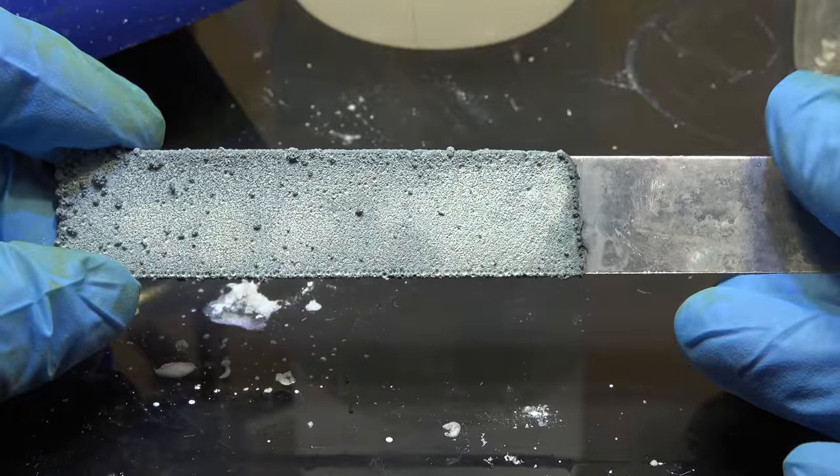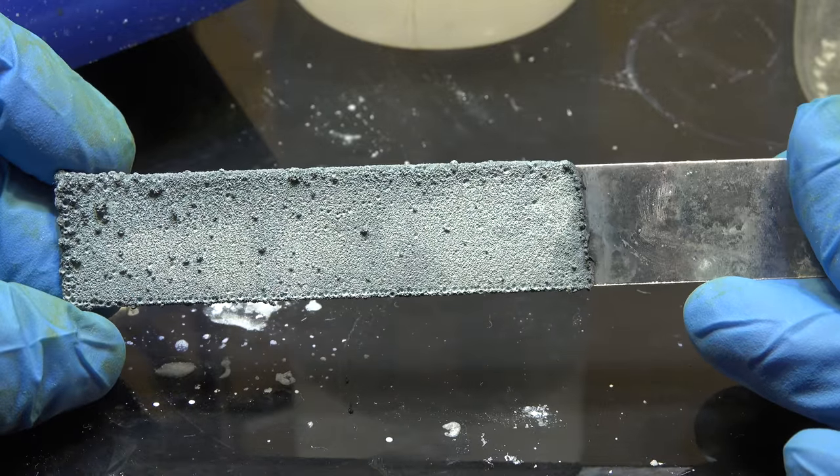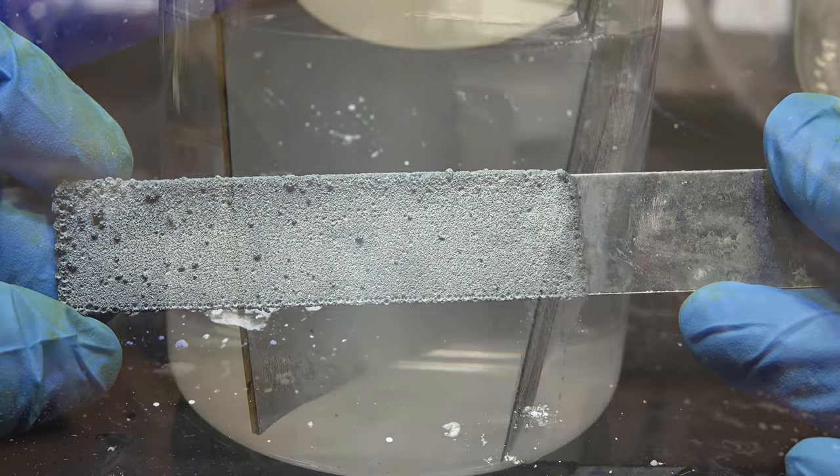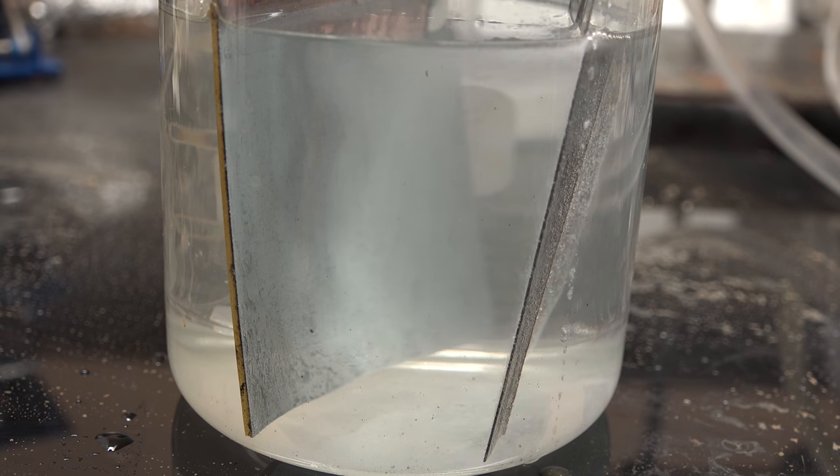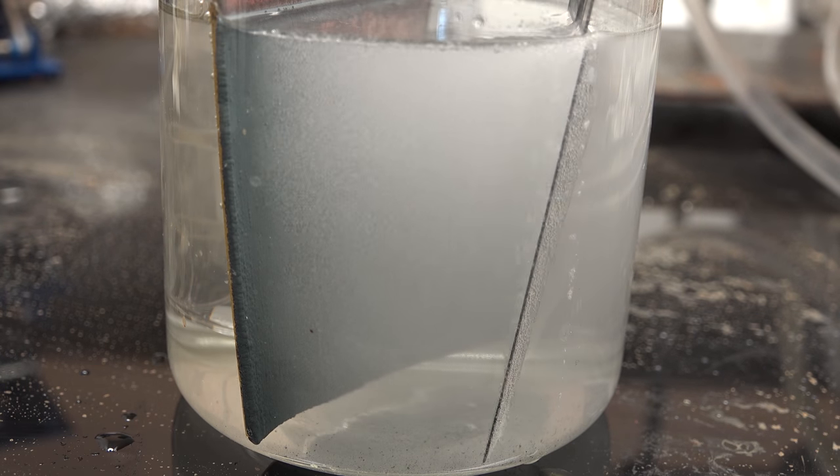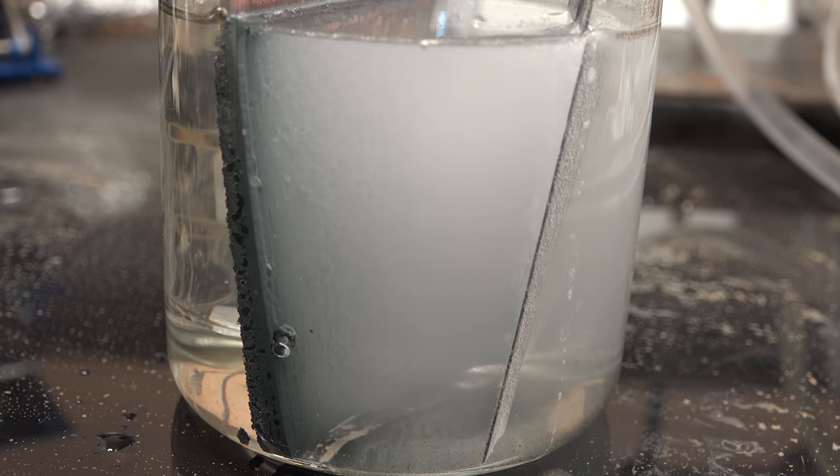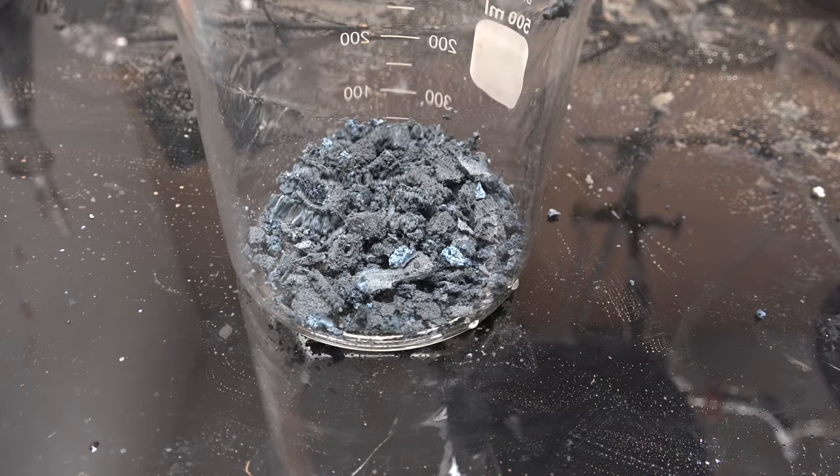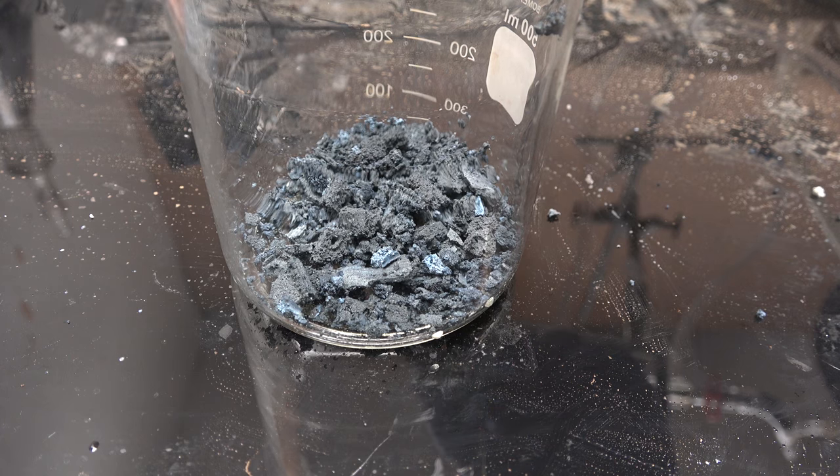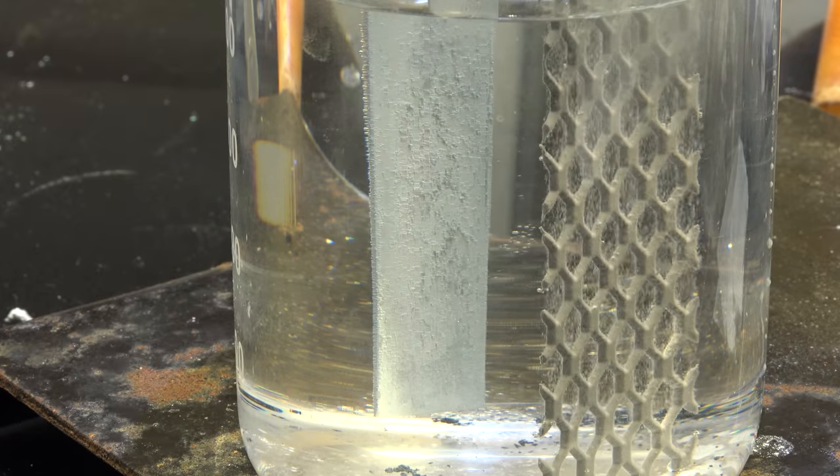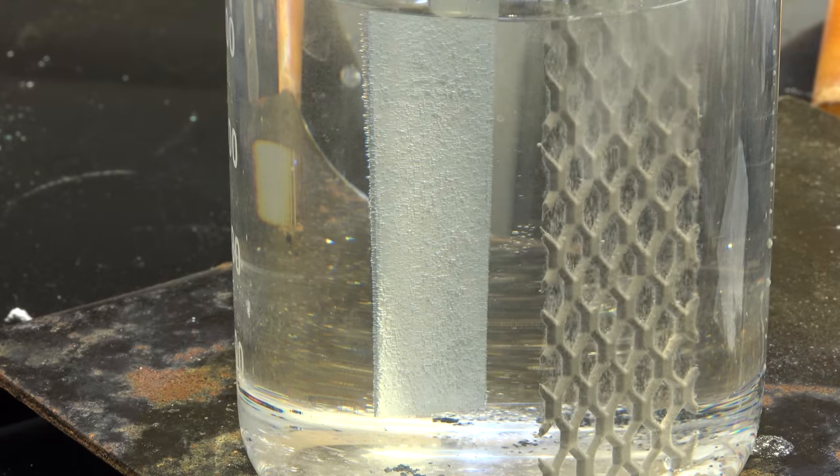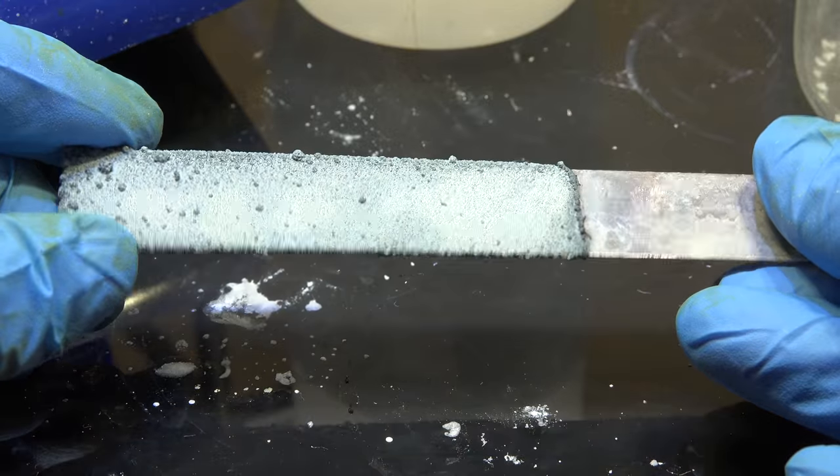In this video we're going to make zinc metal by electrochemistry. Now previously I showed the alkaline zincate process which is easy, straightforward and somewhat forgiving of variations in current and concentration. The drawback is that it only produces zinc powder. In this video I'll show the acidic sulfate process which is harder and more complex but lets you produce solid deposits of zinc.